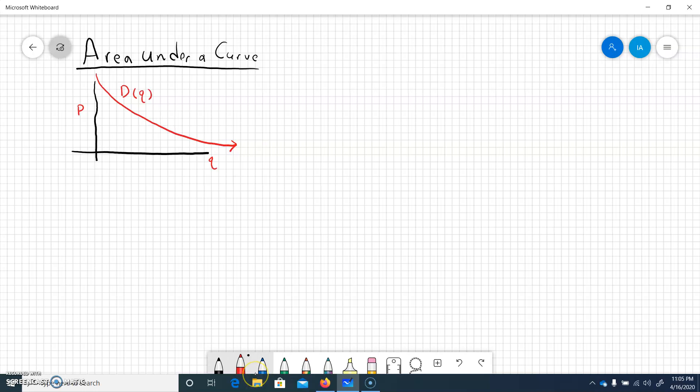And if we wanted to find the area under this curve, we might mark off an interval from A to B and we would be trying to find the area in here. And we looked at that as being a definite integral from A to B of our curve, which we're calling D of Q. Now of course that would be an expression or an equation. And in this case our input variable is Q, so we'd integrate that in terms of Q. And that would give us the area under that curve.